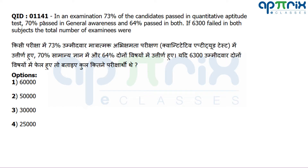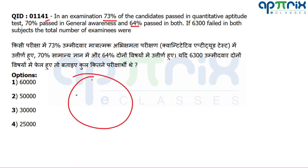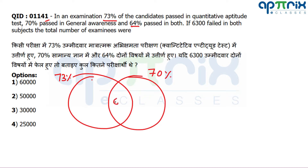Question number 1141: In an examination, 73% candidates passed in quantitative aptitude, 70% passed in GS or general awareness, and 64% passed in both. If 6300 students failed in both subjects, the total number of examinees were. We are talking about 73% for QA, 70% for GA, and a common area of 64%.